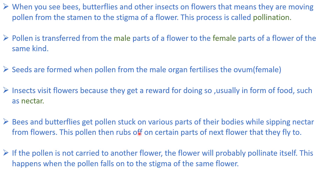Bees and butterflies get pollen stuck on various parts of their bodies when they come to the flower for the nectar — for their purpose to eat food. The pollen gets stuck on their bodies while sipping the nectar from the flower. This pollen then rubs off on certain parts of the next flower that they fly to. Whenever they go to another flower, that pollen stuck on their body rubs off on a certain part of the next flower.